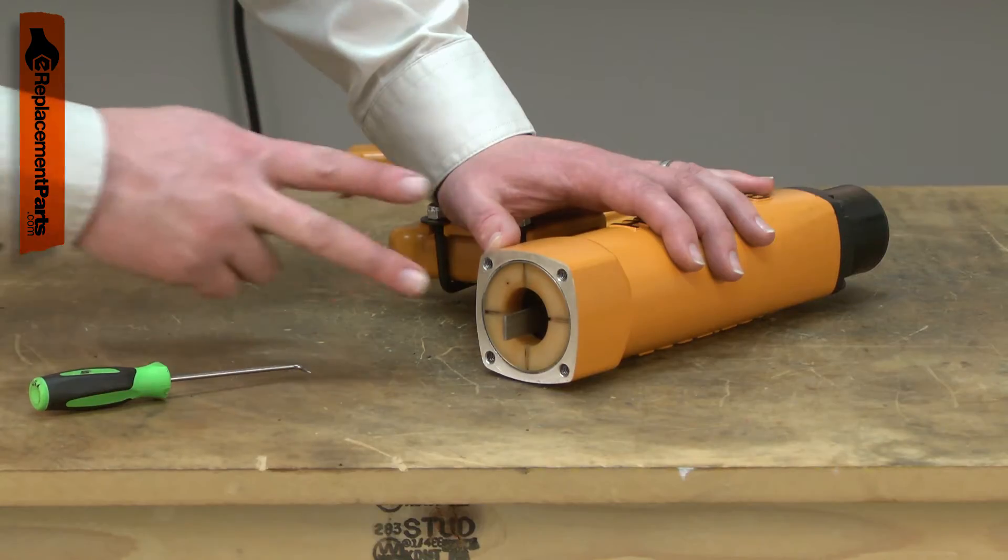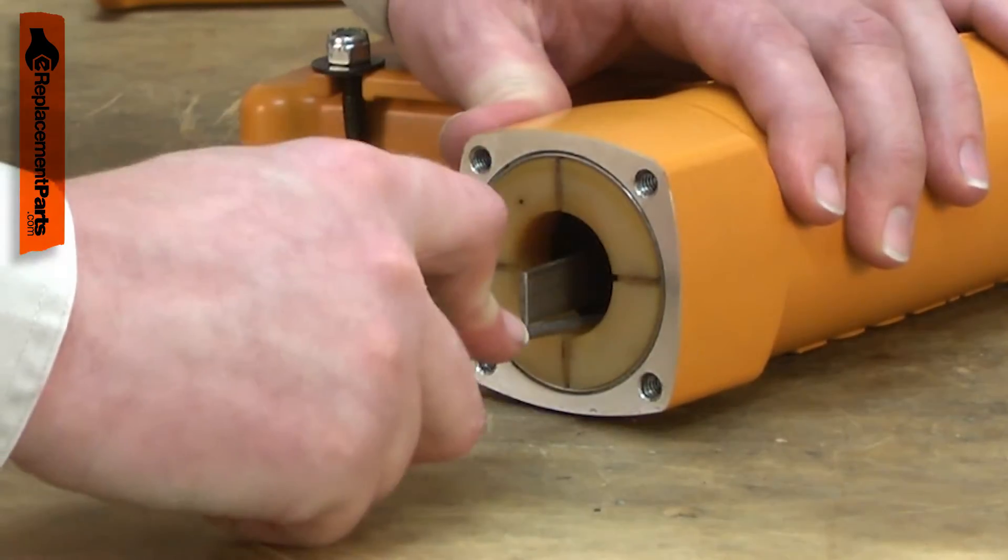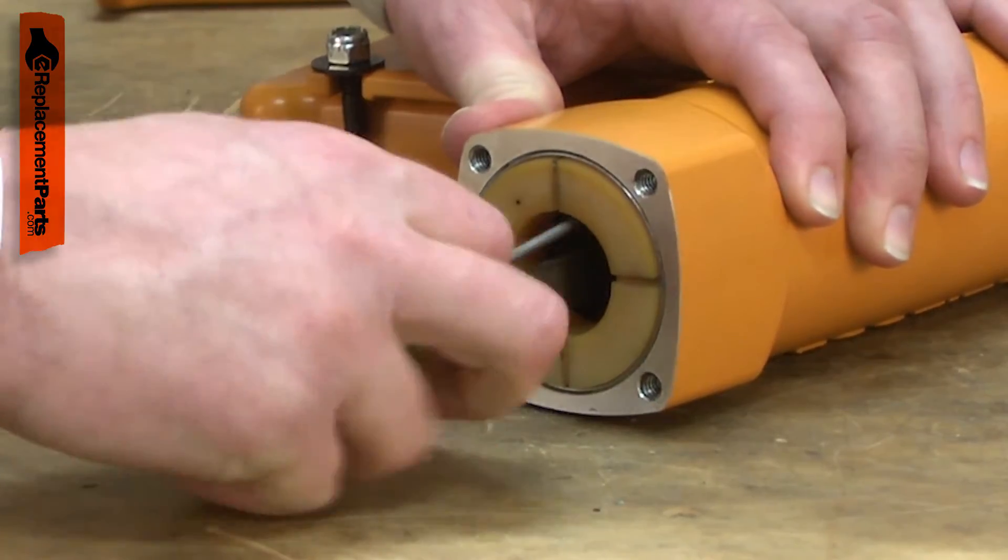With the base and nose piece out of the way, now I can remove the bumper. I'll use a pick to do that. I'll work my way around the bumper with the pick, slowly prying it out of the housing.